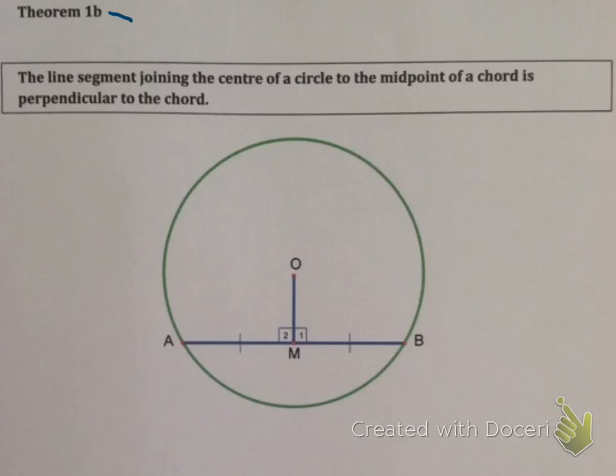Right, we're going to go on to theorem 1B. Theorem 1B is almost the exact opposite of theorem 1A, so we call it the converse. It literally means the opposite. Not all converses are true. For example, all squares are rectangles—that is true. But all rectangles are not squares. So it's not always true that the converse of a theorem is true. In this case it is.